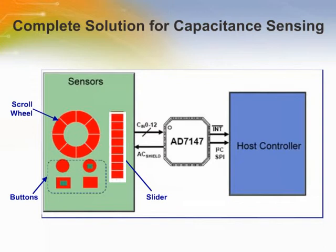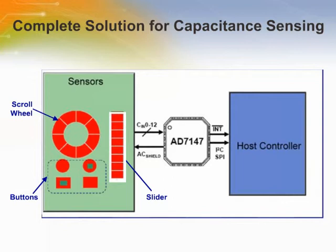There are many user input applications for capacitive sensing. A simpler application is switch buttons or keypad design. A software that runs on the host processor is needed if the application requires higher positional resolution sensors such as scroll bars or wheels. The memory requirements for the host depend on the sensor and are typically 10 kilobytes of code and 600 bytes of data memory depending on the sensor type.